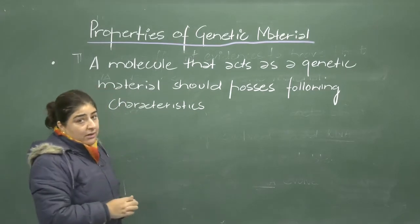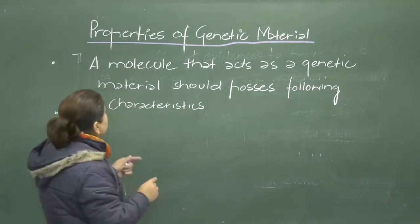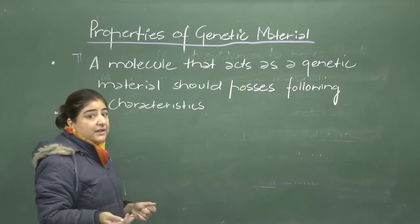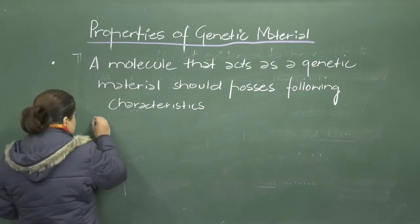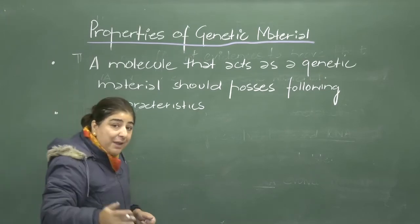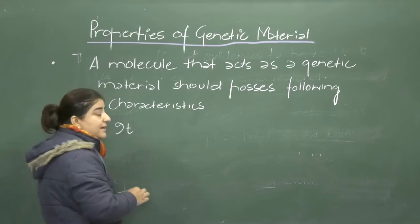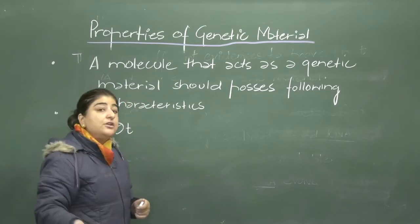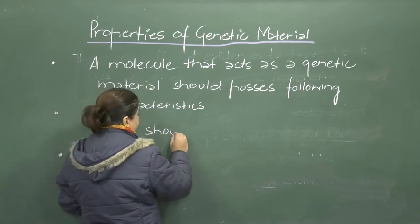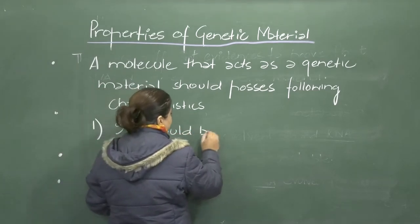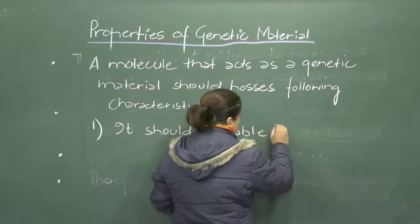The first property that a genetic material should possess is that it should be able to replicate. It should be able to make its carbon copies.